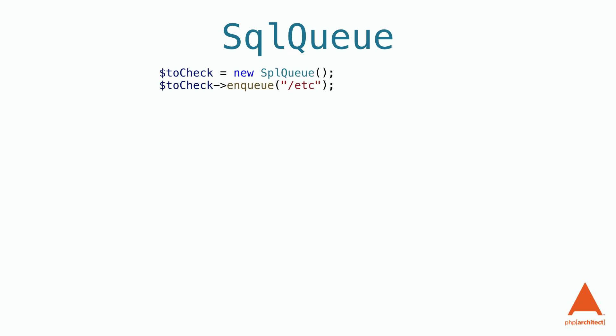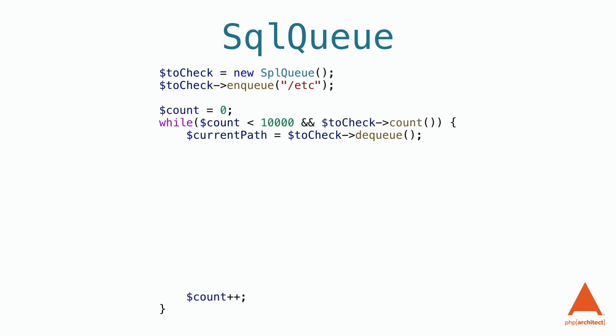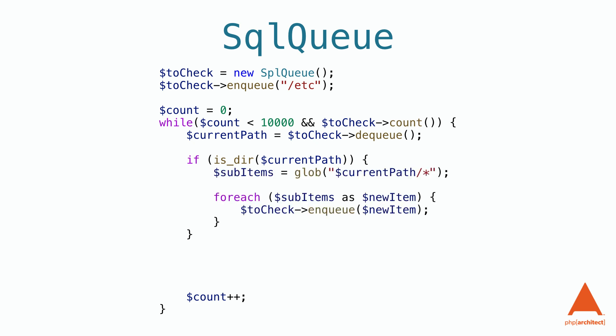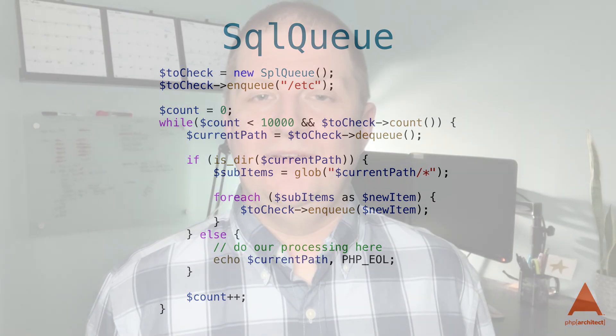Let's work through an example of how we can create a tool to loop through all of the files in a directory structure without using recursion. To start, we'll create a queue and put our search directory into it. For this example, we'll search the /etc directory. Next, we'll enter into a loop where we loop through until we've checked all of the elements in the queue. I always like to set some kind of a COUNT check to prevent an infinite loop. We need to add a check to see if the current path is a directory — if it is, we'll get the contents of the directory and add it to our queue for later checks. Finally, we can add our logic to process the file. The benefit of this solution over recursion is that it's easier to debug, and we could serialize the queue, save it to disk, and restart it later.